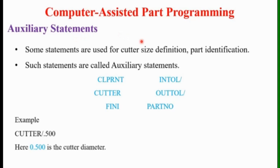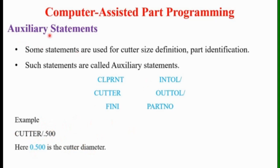Some statements are used for part identification and cutter size definition, and such statements are called auxiliary statements. For example: CLPRNT (print), INTOL, CUTTER, FINI (used to finish), and part number. For example, CUTTER / 0.500 — here 0.500 is the cutter diameter. In order to define the size of the cutter, auxiliary statements are used. These are a few auxiliary statements shown here.